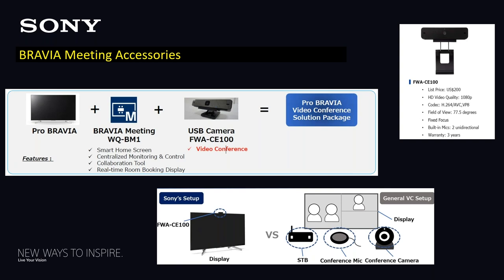The other accessory for Bravia Meeting is the USB camera called the FWAC-E100, intended to be used with the Bravia Meeting application and Bravia display. It enables video conferencing from Bravia to Bravia — if you have two of these set up in a facility on the same network, you can conference with each other. This is a first step as a video conferencing solution, with other applications being evaluated for future use.